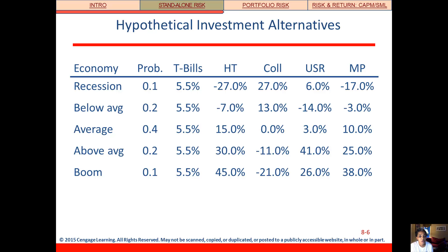Now let's work through our example. What we have here is a set of hypothetical investment alternatives for three firms, the market, and T-bills. Our three firms are HT, which stands for high-tech, COLL, which stands for collections, and USR, which stands for US rubber. What we have are the expected returns for each firm, T-bills and the market, in these possible future states of the economy, as well as the probability that each state will actually occur.